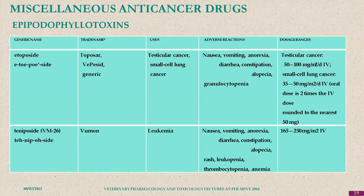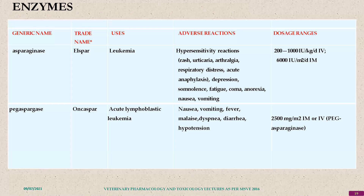Miscellaneous antineoplastic drugs include the epipodophyllotoxins. Etoposide and teniposide are very common drugs used in testicular cancer and small cell lung cancers. Teniposide is also used in leukemia.